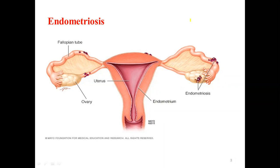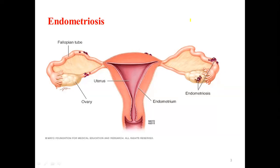The endometrial cells are the cells that mostly line the uterus and are very important specifically for implantation. When endometrial cells grow outside the uterine tissues, they can cause inflammatory reaction and even physical blockage of the reproductive tract. Some of these tissues are internal and some are external — they grow outside the reproductive tract.